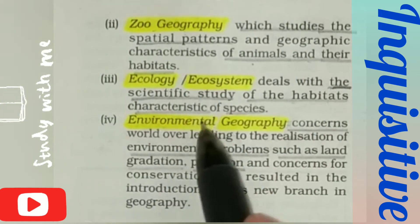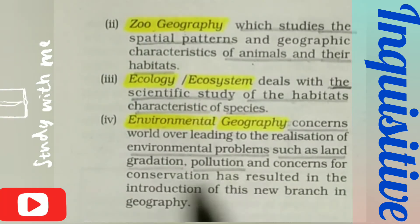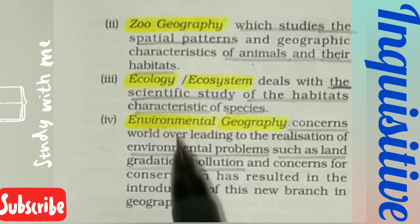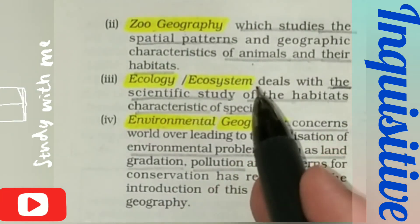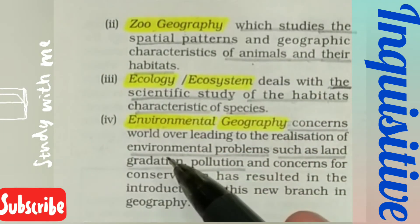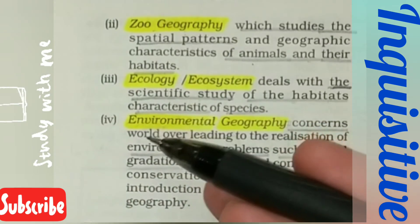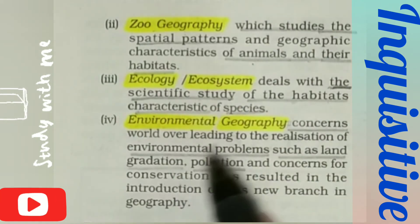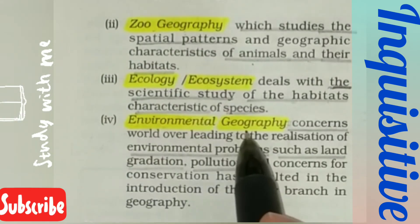The last topic is environmental geography. It is generally concerned with environmental problems such as land degradation and pollution. Humans interact with nature to satisfy their needs, and because of this interaction and involvement, many problems are created — such as air pollution and water pollution. This study is done in environmental geography.